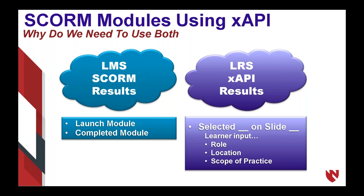The xAPI results capture things like what the learner input, what their role is, where they're located, what they do within their role, whether they perform certain procedures, and whether they have privileges to do certain things. This is where we really leveraged xAPI to give us that granular detail within the module that is challenging — if not impossible — for SCORM to do.